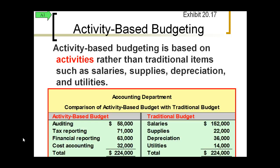Activity-based budgeting is based on activities rather than salaries. An activity could be almost anything — we take one specific activity and budget what we think will be the costs incurred for that activity. This slide gives a comparison between two different budgets: one is a traditional budget based on category, typically from your general ledger, and the other is based on activities — such as auditing, tax reporting, financial reporting, or cost accounting. In this case, we're looking at the accounting department and the different areas within it that make up the total cost.